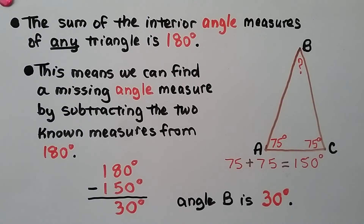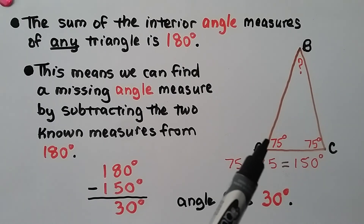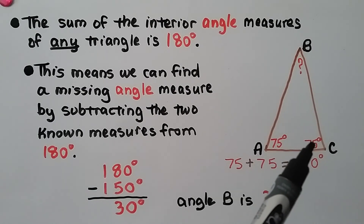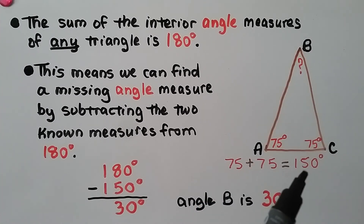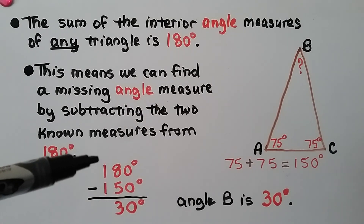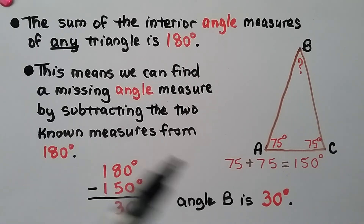The sum of the interior angle measures of any triangle is 180 degrees. This means we can find a missing angle measure by subtracting the two known measures from 180 degrees. If we know one angle is 75 degrees and another is 75 degrees, we add 75 plus 75 to get 150 degrees. We subtract from 180, and we know angle B is 30 degrees.